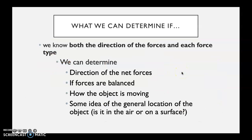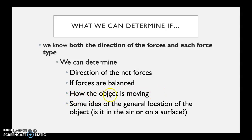If we know both the direction of the forces and the type of force, we can gather a lot more information. We can still get the direction of the net force and tell if the forces are balanced. We can now also tell how the object is moving — what direction — and get a general idea of where its location is.